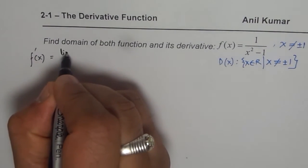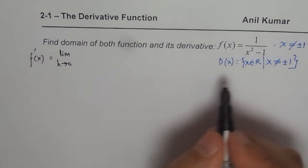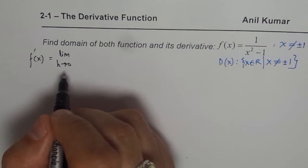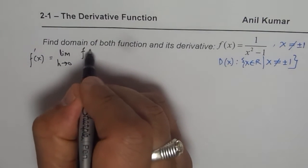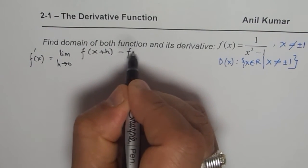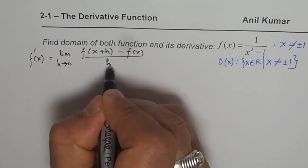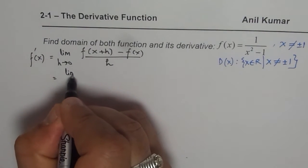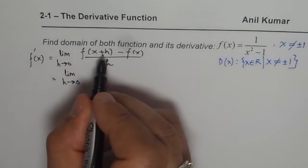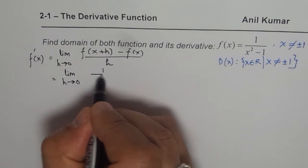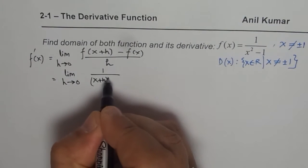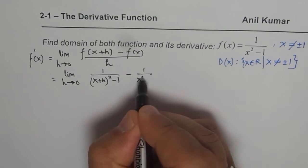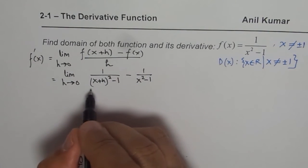So f'(x) equals the limit as h approaches 0 of [f(x+h) - f(x)] / h. We take two points very close to one another and find the rate of change — that is the derivative. For this function, f(x+h) = 1/((x+h)² - 1) and f(x) = 1/(x² - 1), all divided by h.